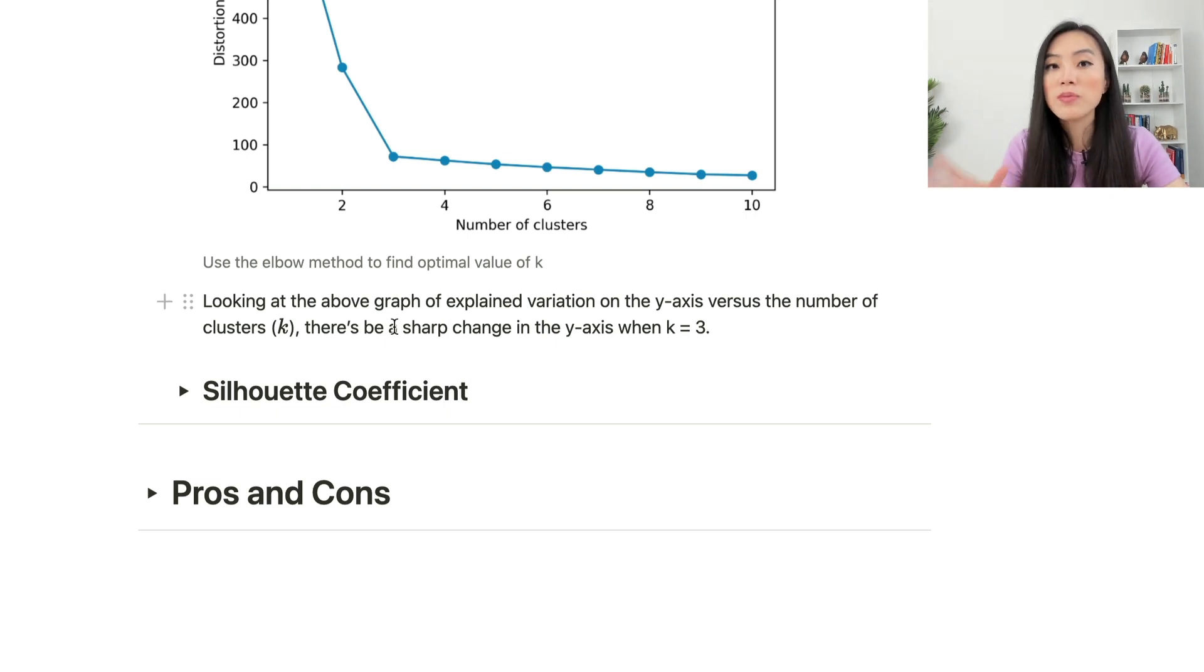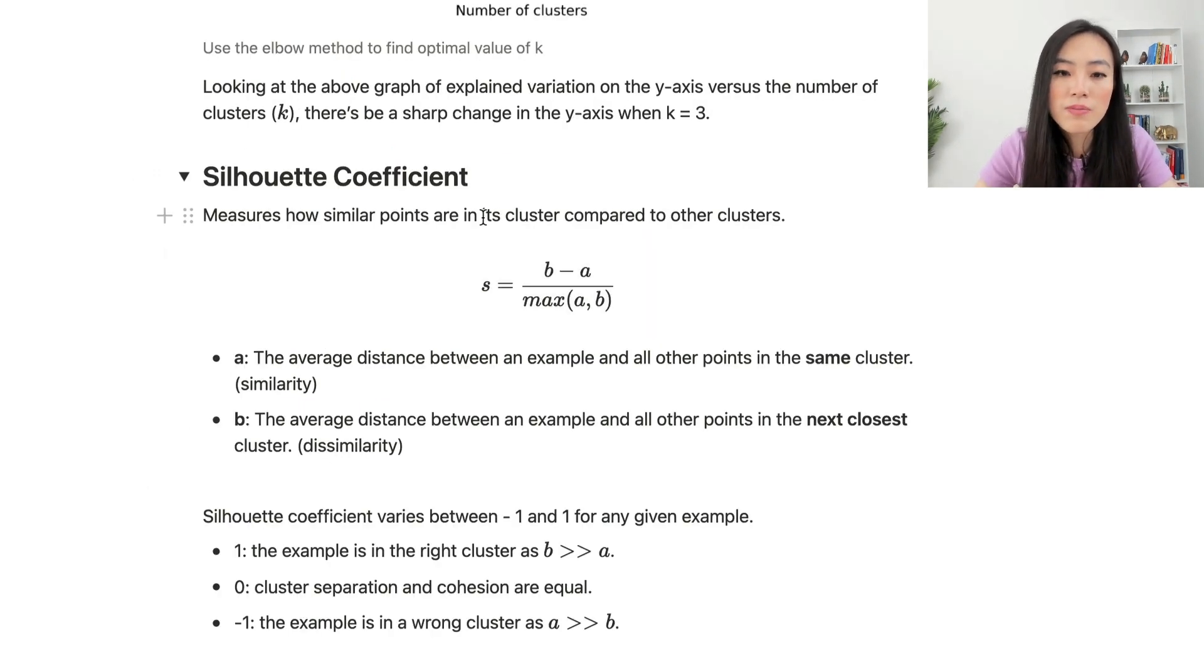Another commonly used method to find the optimal K for K-means is the so-called silhouette coefficient. The silhouette coefficient measures how similar points are in its cluster compared to other clusters. This is how we define the silhouette coefficient: it's b minus a over maximum of a and b.